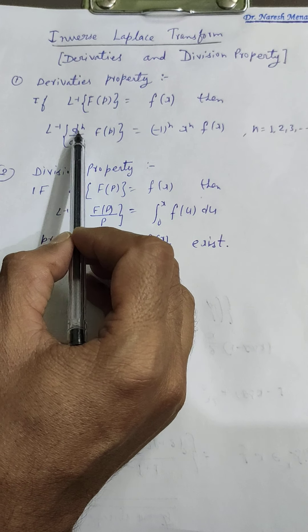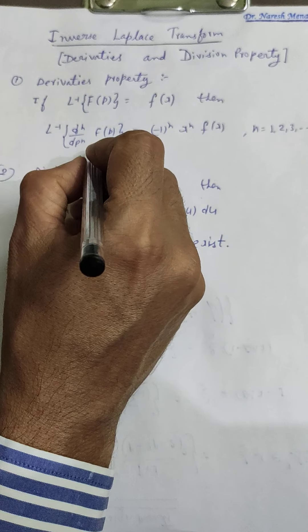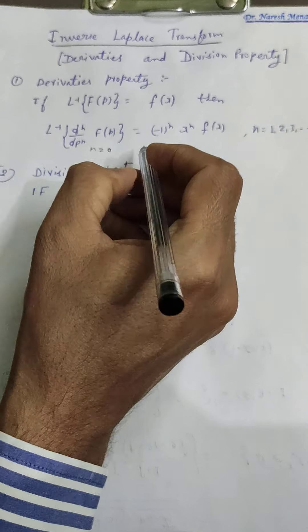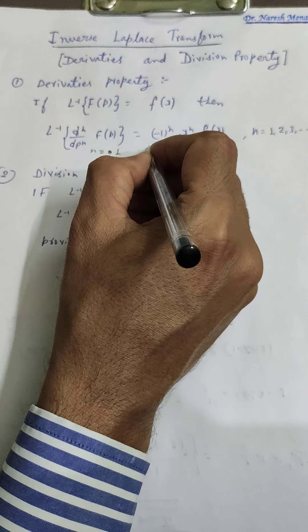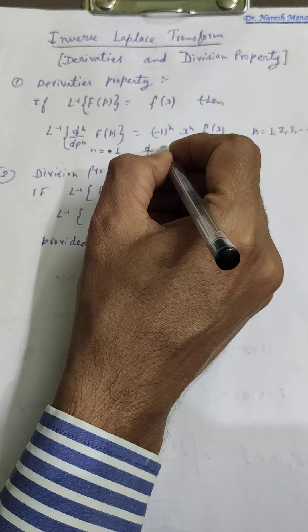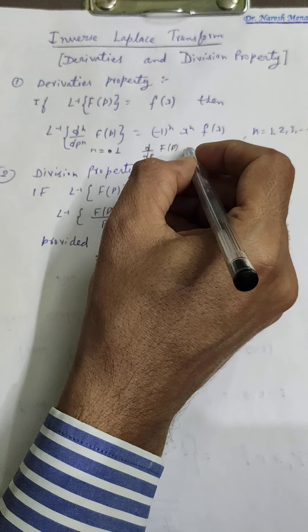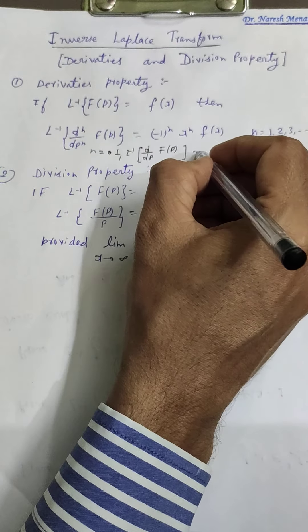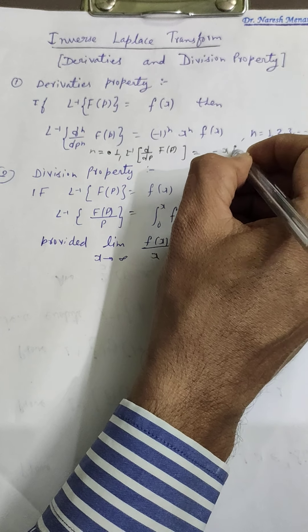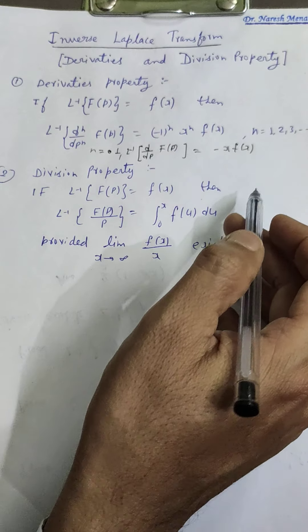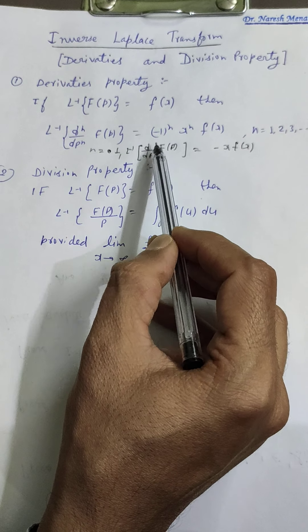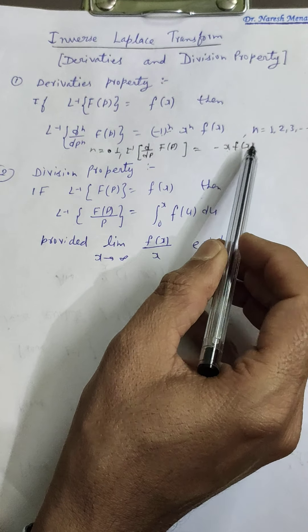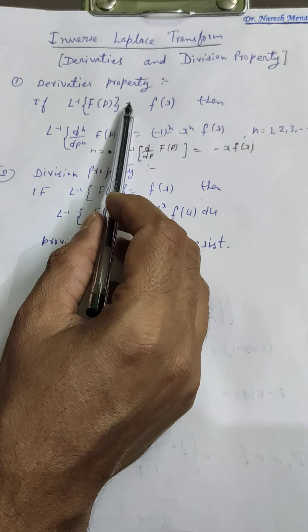If we take n equal to 1, then d/dp of F(p), and its L inverse equals minus x · f(x). Here f(x) is the inverse Laplace transform of F(p), and we have simply substituted n equal to 1 into the general formula.